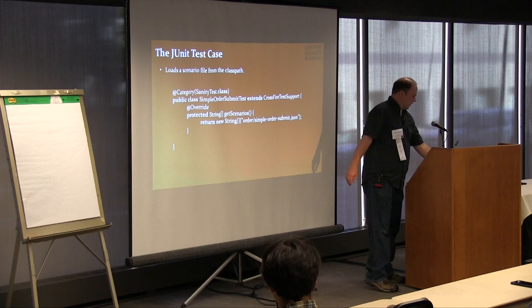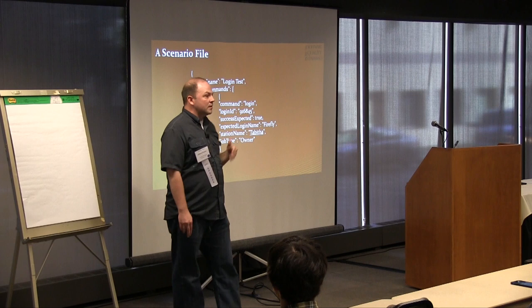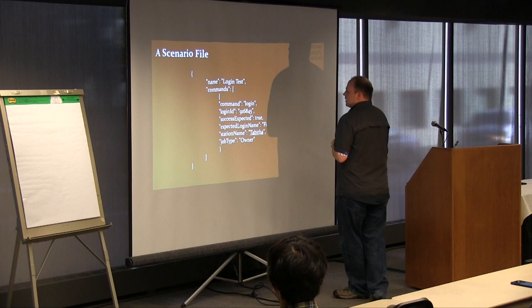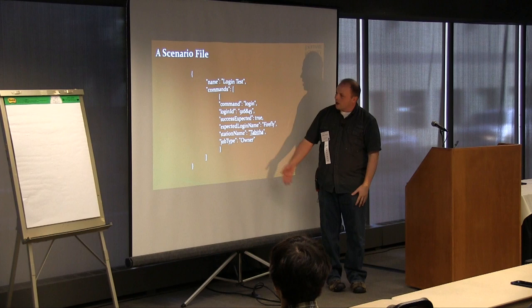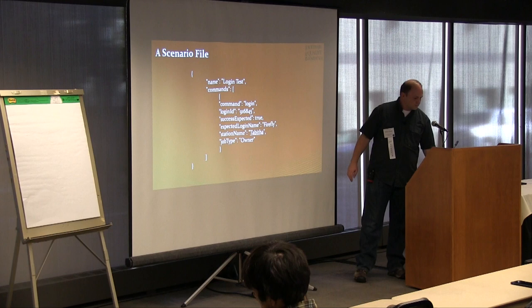And then here's what an actual JSON scenario file looks like. Again, very complicated. It has a name and some commands, and the commands is an array of just commands. And those commands get serialized or deserialized as POJOs. We parse them. This example is the login command. Remember, there's nothing here that's specific to the underlying product. We're not referencing any DOM elements, any CSS elements. It's very generic. We're telling it to login, here's the login ID, do you expect it to succeed.